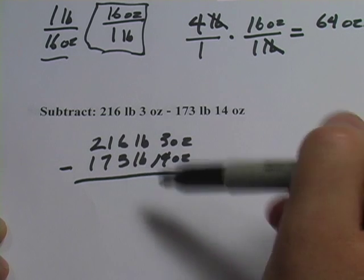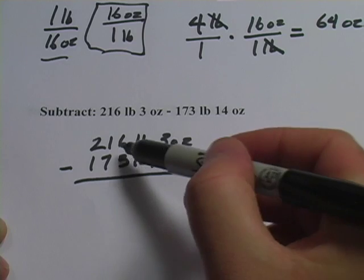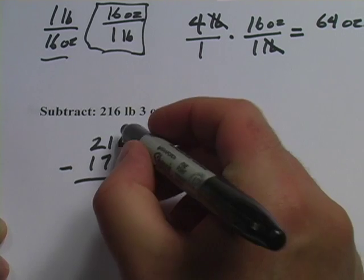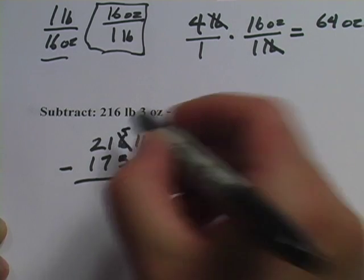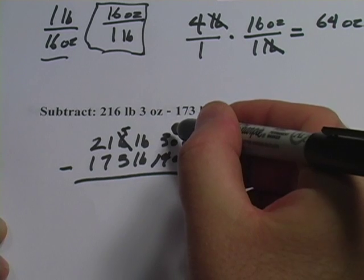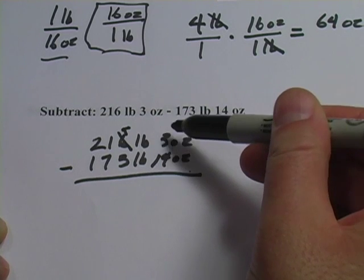Well the next unit over is in pounds. And I'm going to take away 1 pound from that 216. That makes this 215, and I get 1 pound over here, but I need to convert it to ounces before I add it in.